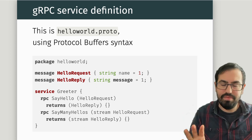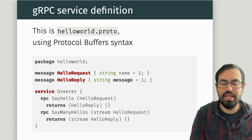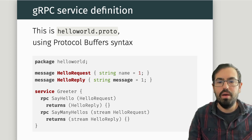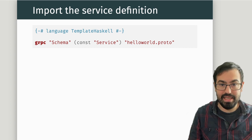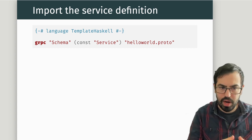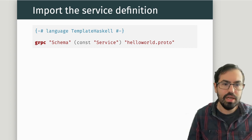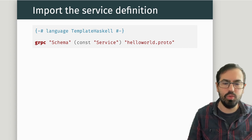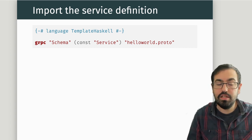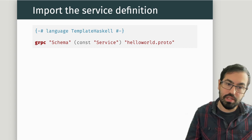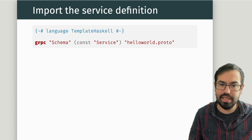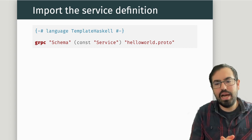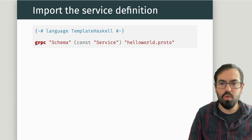You write this proto file outside of your Haskell project, and then using Template Haskell, we import this service definition. You write one line saying you want to import this gRPC definition, and this generates two types: one called Schema, with information about the messages, and one called Service, with the service definition — imported from the hello-world.proto file.